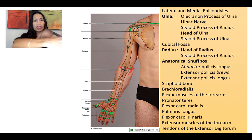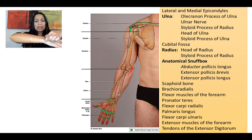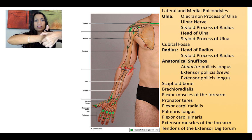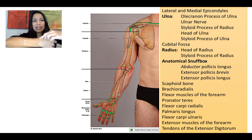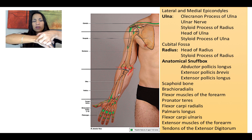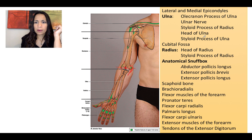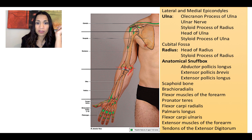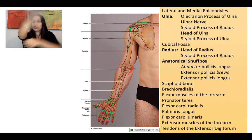The styloid process of the radius: when you grab the distal portion of your forearm, you can feel on the radial side the styloid process of the radius. And on the other side is the styloid process of the ulna.